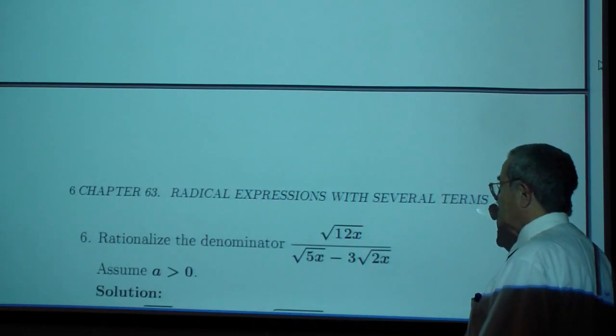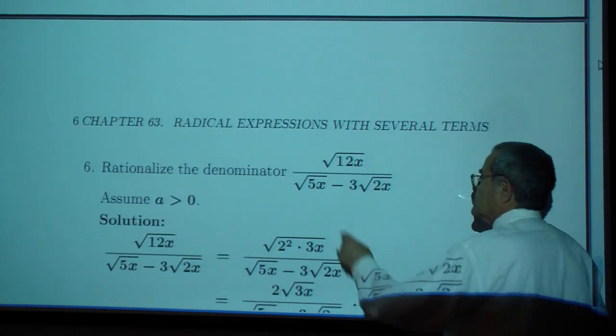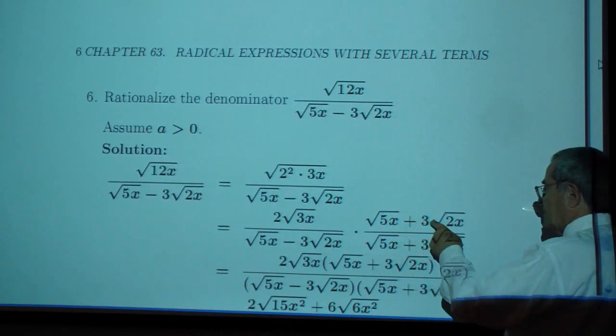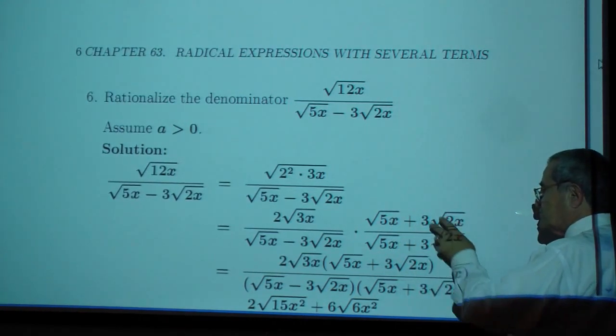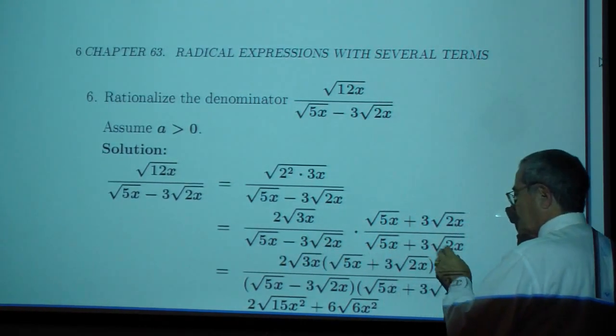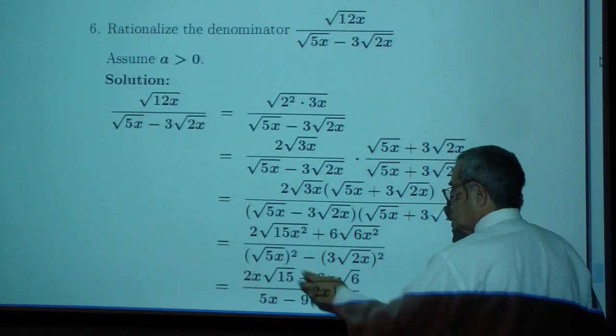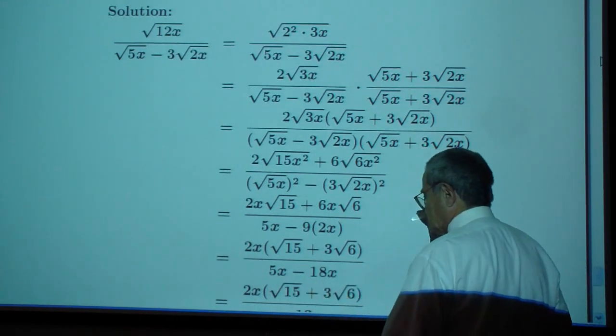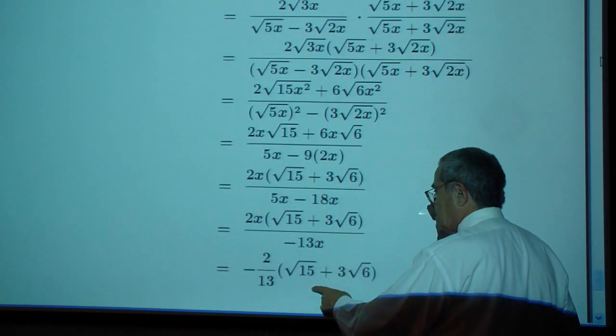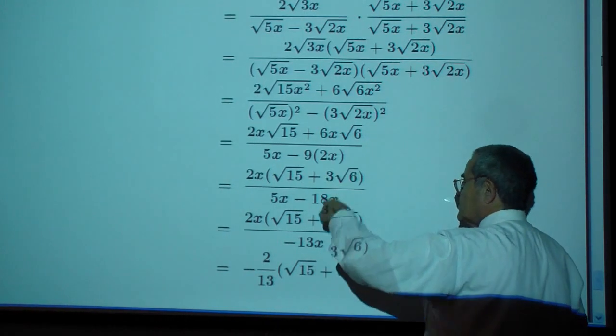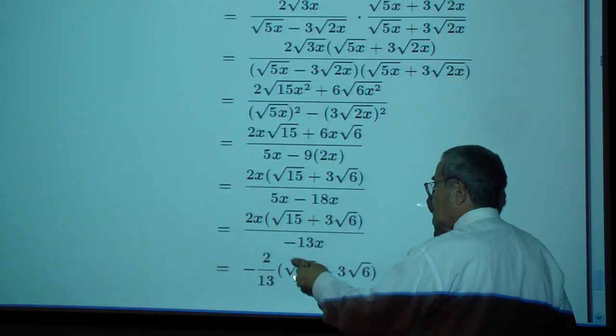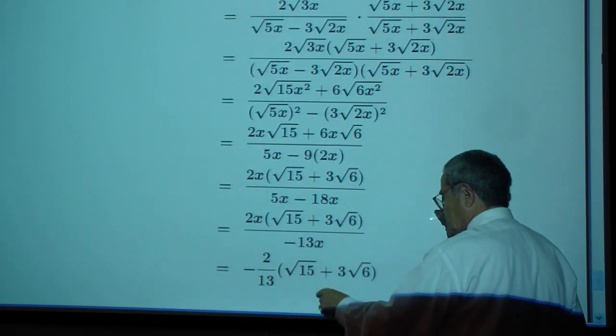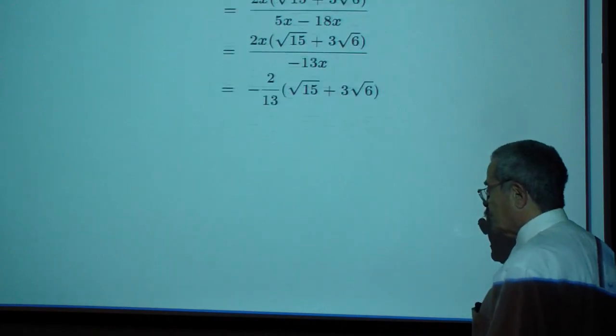And then finally multiply by the conjugate of the denominator namely square root of five x plus three square root of two x. The denominator is a minus b times a plus b which gives you a squared minus b squared or five x minus eighteen x which is negative thirteen x. And the numerator you just crank out and it's supposed to be negative two times square root of fifteen plus three square root of six.